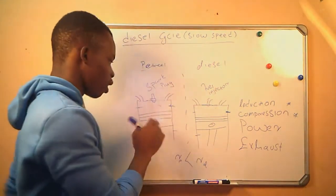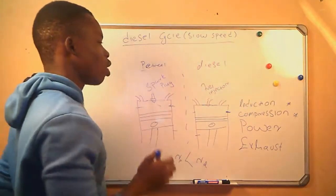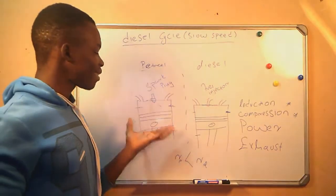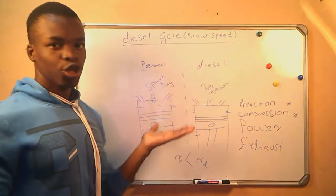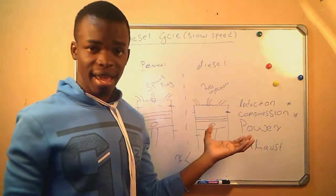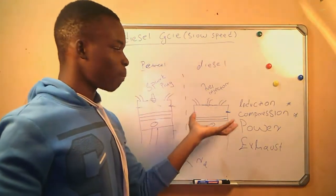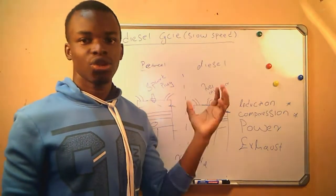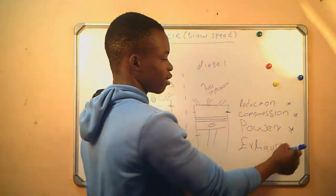We go to the compression stroke. Since we have fuel mixture inside the combustion chamber, that fuel mixture will be compressed as the piston is moving from the bottom dead center to the top dead center. And here, since we only have air, that is what is going to be compressed as the piston is moving from the bottom dead center to the top dead center.